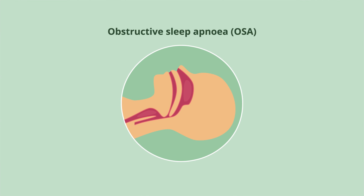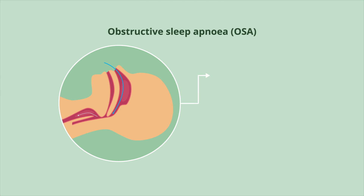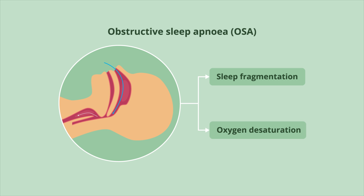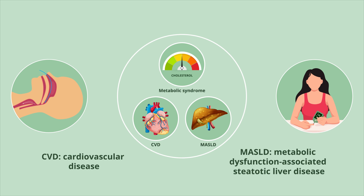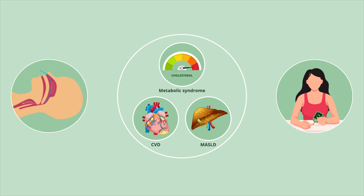Obstructive sleep apnea, or OSA, is a condition characterized by upper airway obstruction causing either sleep fragmentation and/or oxygen desaturation. Type 2 diabetes is marked by insulin resistance and glucose intolerance. Unfortunately, OSA and type 2 diabetes can coexist and have bidirectional negative health effects. Both are independently associated with cardiometabolic abnormalities, and patients who have both are considered very high risk for major adverse cardiovascular events, such as acute coronary syndrome, stroke, or heart failure.